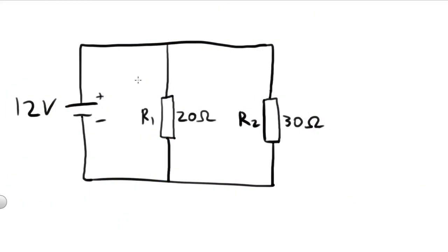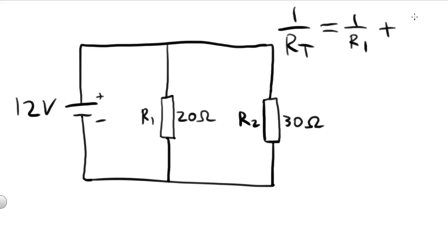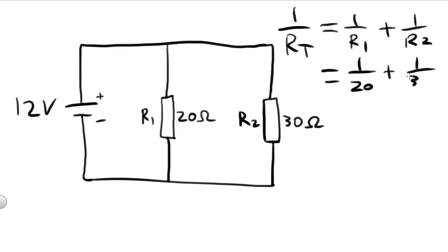In this circuit, we have two resistors in parallel — that is, they're not in series, they're not end-to-end. The relationship between total resistance and the resistors in parallel equals: 1 over R total equals 1 over R1 plus 1 over R2. So if we fill in the details, 1 over 20 plus 1 over 30 equals 1 over our total resistance.